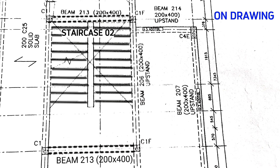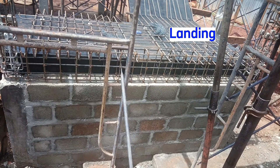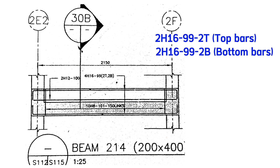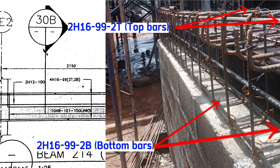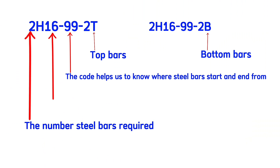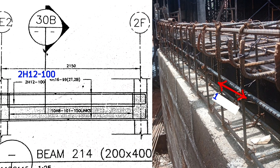Beam 213 is 200 by 400 millimeters. This is column C1 and this is column C1F. From here to here is the landing. These are two H16 Code 99 for two top bars and two bottom bars, with the code indicating where bars start and end, two being the number of bars and 16 the bar thickness in millimeters. Also, there are two H12 Code 100 bars, 18 H8 Code 101 links at 150 millimeters spacing center to center.